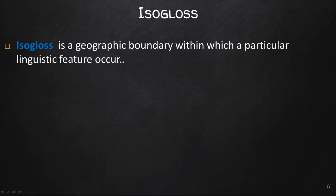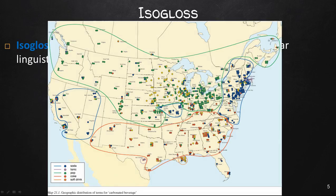An isogloss is a geographic boundary within which a particular linguistic feature occurs. However, it is rarely a simple line — there are usually outliers of usage and boundaries change over time. Here is an isogloss map of carbonated beverages. 'Soda' is used in the Northeast including the mid-Atlantic states and a large southern or southwestern area. 'Coke' dominates the South and extends much further west. 'Pop' is the geographically dominant term extending from the Midlands north into Canada and some of the Northeast. Coca-Cola is located out of Atlanta, which may be why 'Coke' is often the term used in the South.